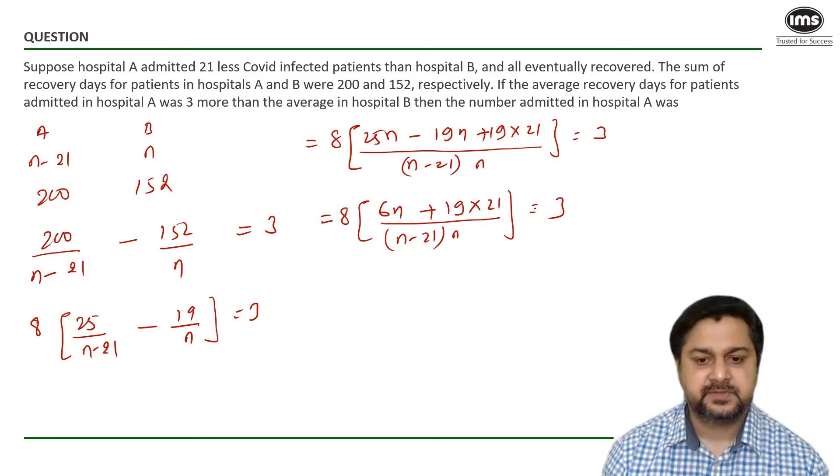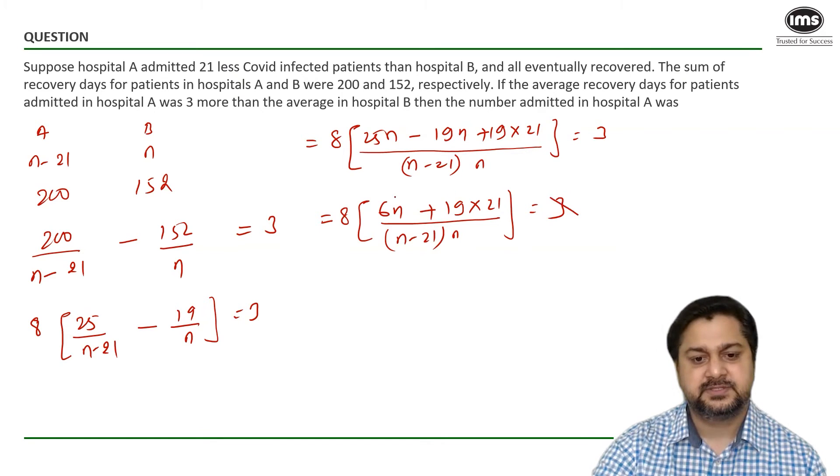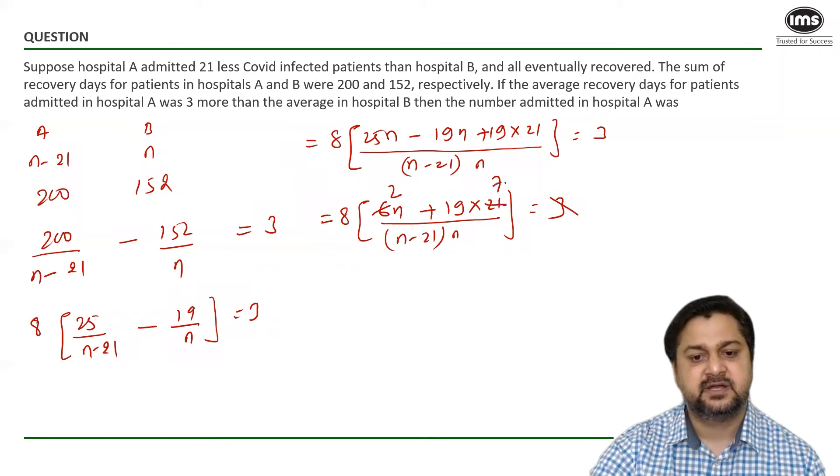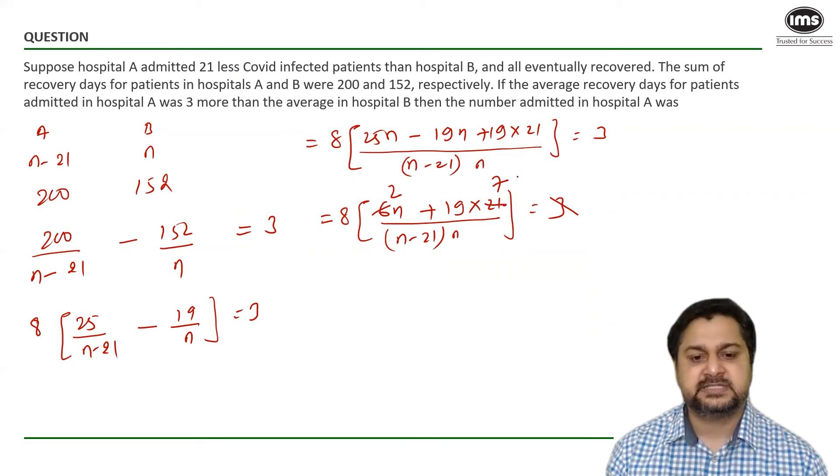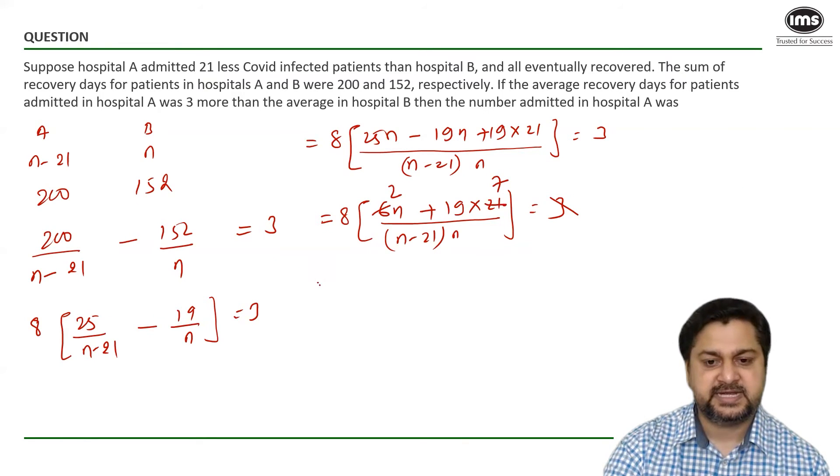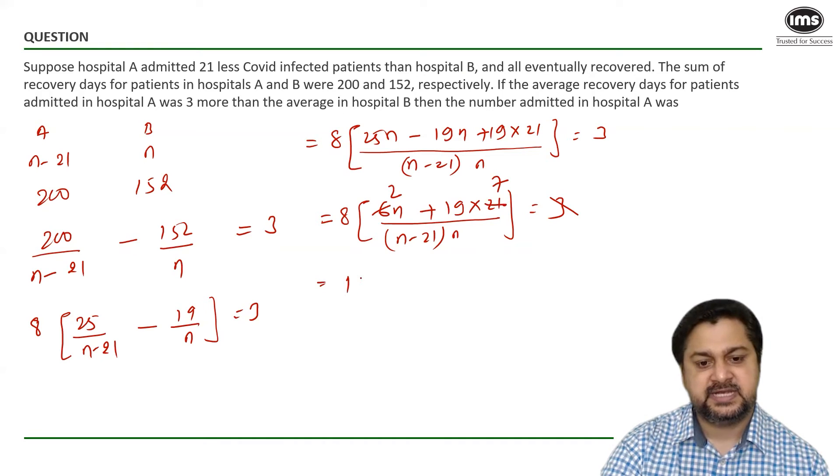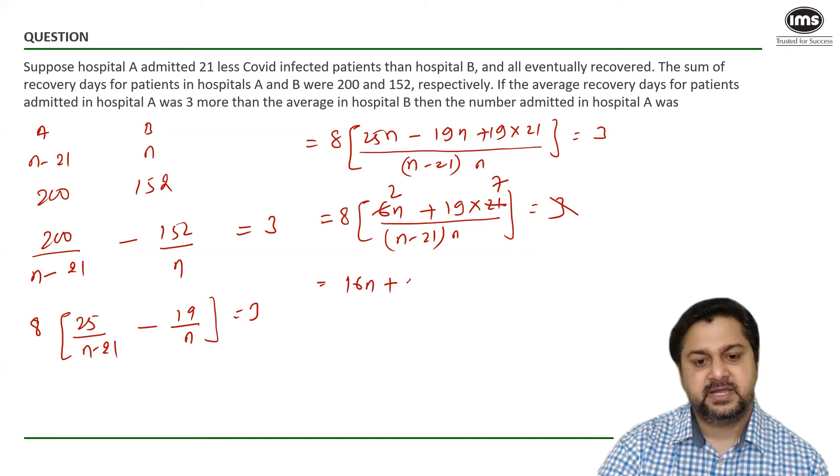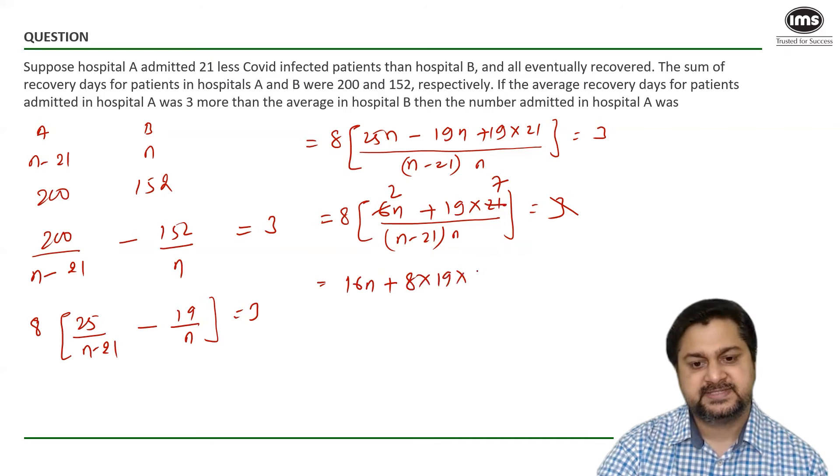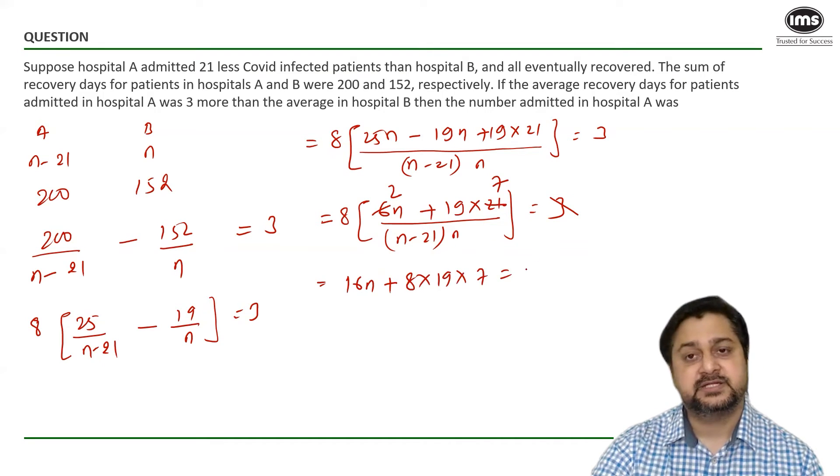This is 6N plus 19 into 21 divided by N minus 21 into N is equal to 3. Can I simplify it further? And I can see this is 3. So 3 times 2 is 6 and 3 times 7 is 21. Let's expand this and multiply 8 inside the brackets. It would give us 16N plus 8 into 19 into 7.